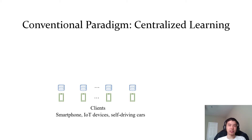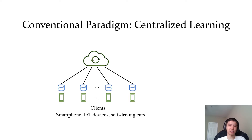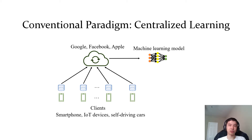In centralized learning, the clients send their raw data to a server, which is managed by a service provider such as Google, Facebook, or Apple. The server uses the clients' data to train a machine learning model, and the model is used to provide services for the clients.